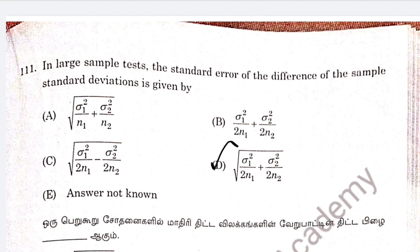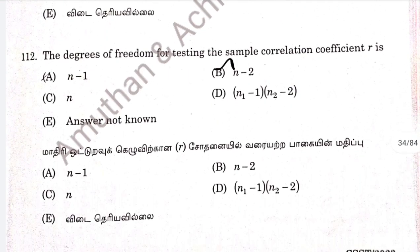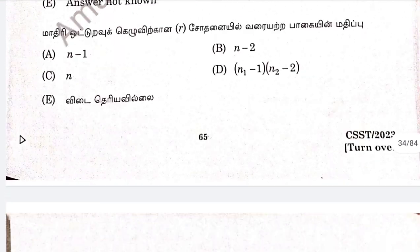The formula is: square root of sigma 1 squared by 2n1 plus sigma 2 squared by 2n2. Question 112: the degrees of freedom for testing a sample correlation coefficient R is option B, n minus 2.